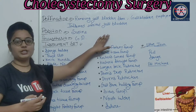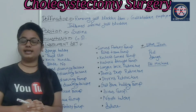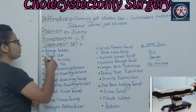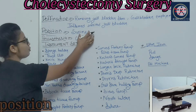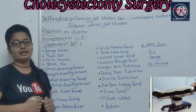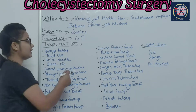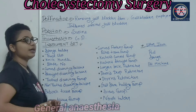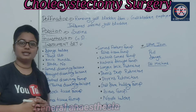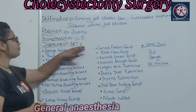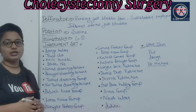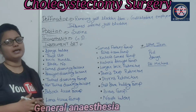When the patient comes to surgery, you will give a position to the patient. The patient is placed in the supine position. Regarding anesthesia, the patient is given general anesthesia. Additionally, spinal anesthesia may also be given. So this is your position and anesthesia.